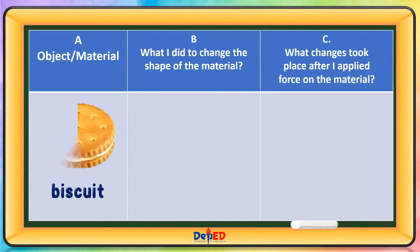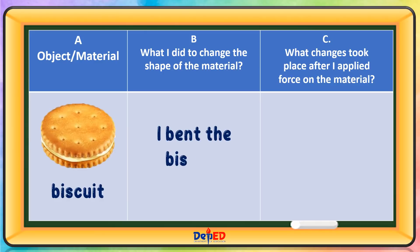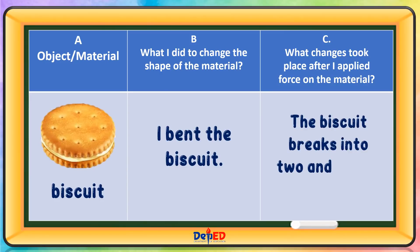Object or material: Biscuit. What I did to change the shape of the material? I bent the biscuit. What changes took place after applying the force on the material? The biscuit breaks into two and makes it smaller.